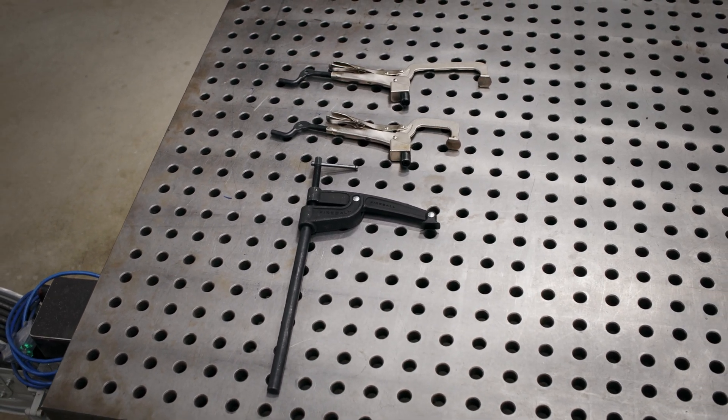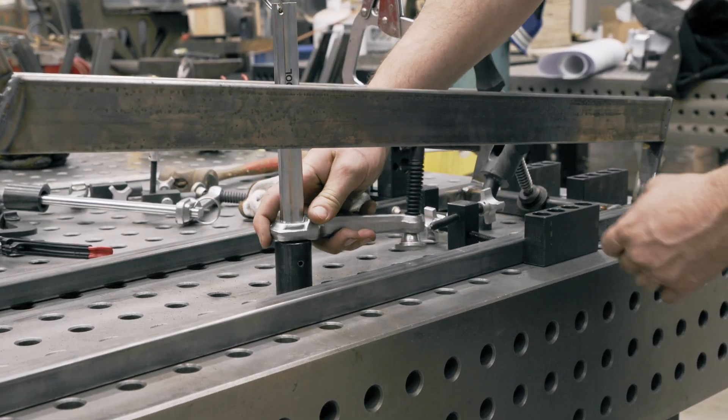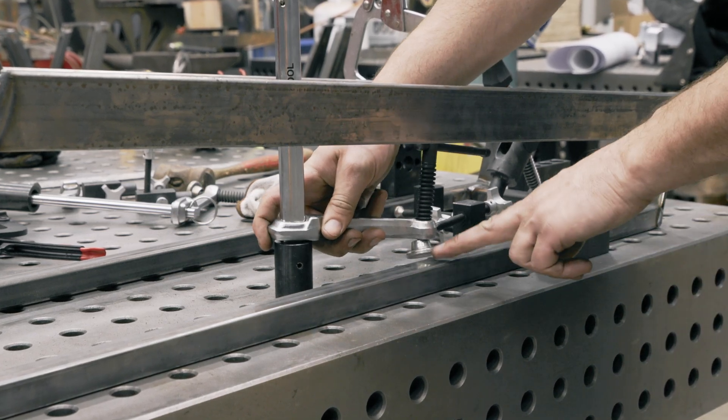Today we're going to be talking about low clearance table clamps. In this instance that I'm facing right now, a standard F style clamp won't get into this small space.